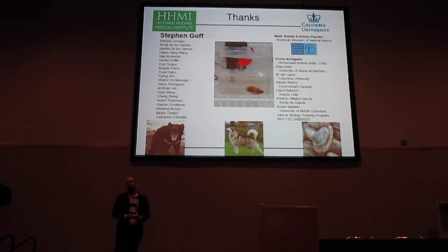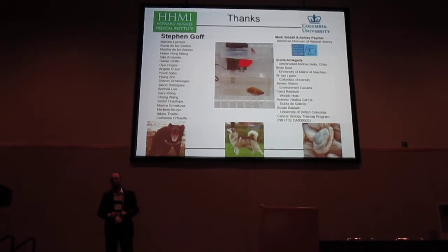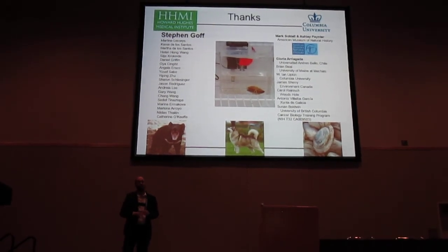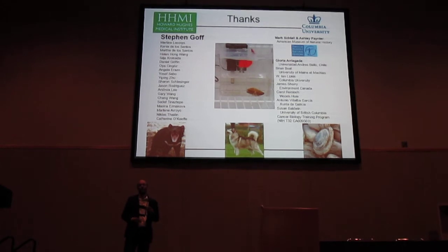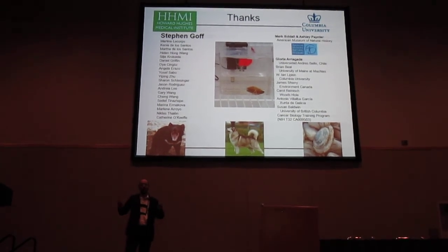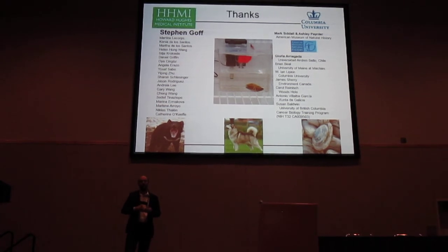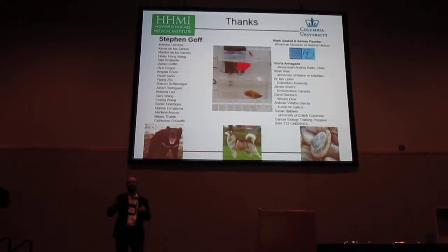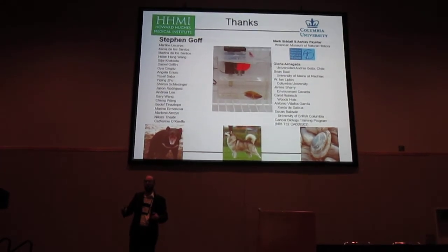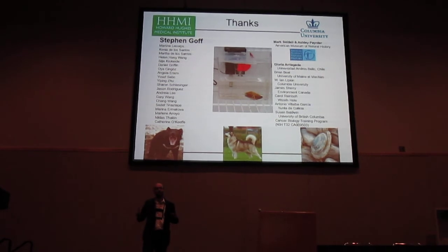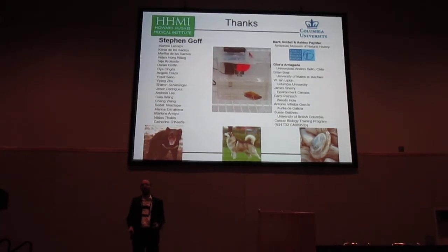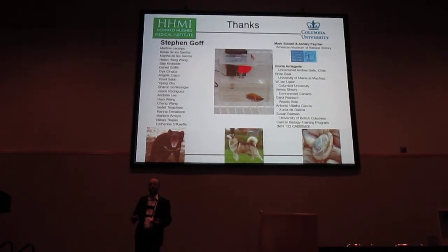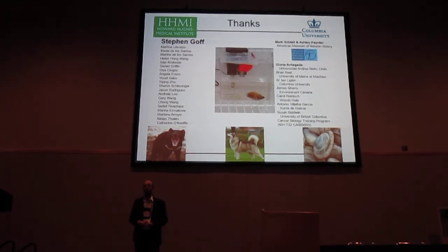Do you think bivalves are particularly prone to transmissible cancers, and why? I think they are filter feeders, and so that provides the mechanism for spread — these cells can get into the water and then be filtered in. They're also invertebrates that don't have MHC, so they don't have an adaptive immune system with the same self/non-self recognition that vertebrates do. That said, there are a ton of filter-feeding invertebrates in the ocean, and I don't know if this is something we haven't looked at enough, or whether there's something else we don't know about.